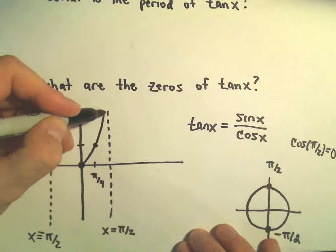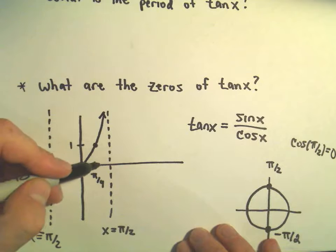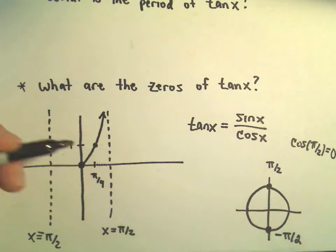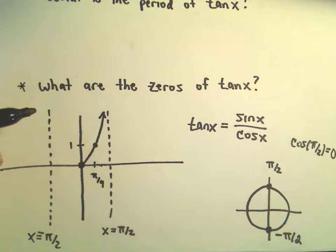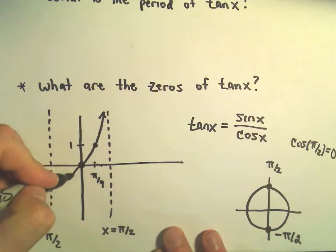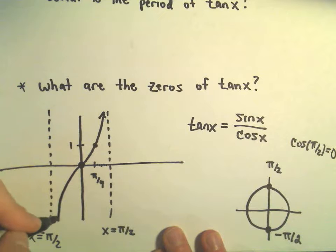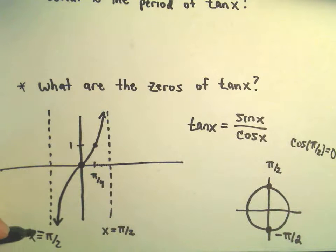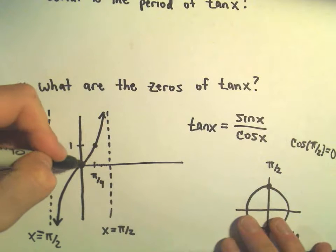As you plug in numbers closer and closer to π over 2 from the left, tangent is going to go off to positive infinity. As you go the other direction, at negative π over 2, it's going to go off towards negative infinity.